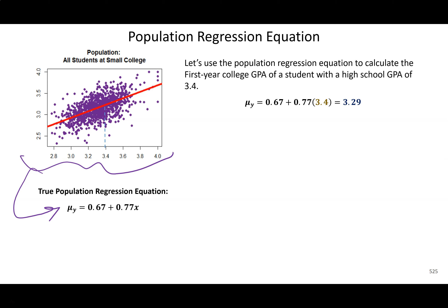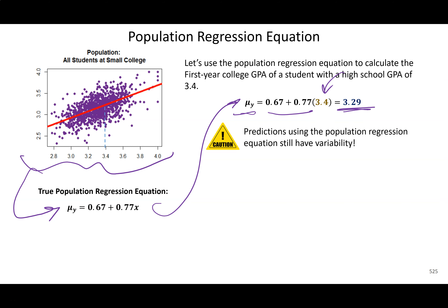From the population line, I can estimate: for a student with a high school GPA of 3.4, what is the average college GPA? Plugging in gives 3.29 — that's the average college GPA for all students who had a 3.4 in high school. But they still have variability — not every student with a 3.4 in high school actually got a 3.29 in college. That's just the average.